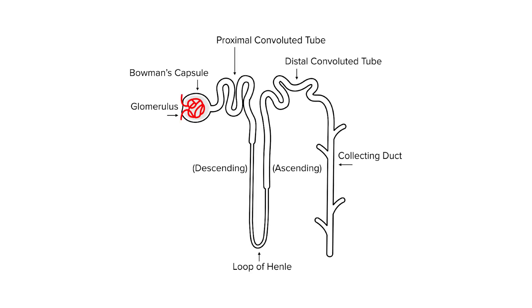For example, if you're studying the renal system as an auditory learner, you may talk yourself through the different structures that filtrate goes through before being expelled from the body. As a visual learner, you may find benefit in keeping a diagram by your side as you learn about the different structures and then labeling all the parts of that diagram. These are all forms of active recall, and you can notice that they're different than passive recall, which might involve you simply reading and then rereading a textbook.